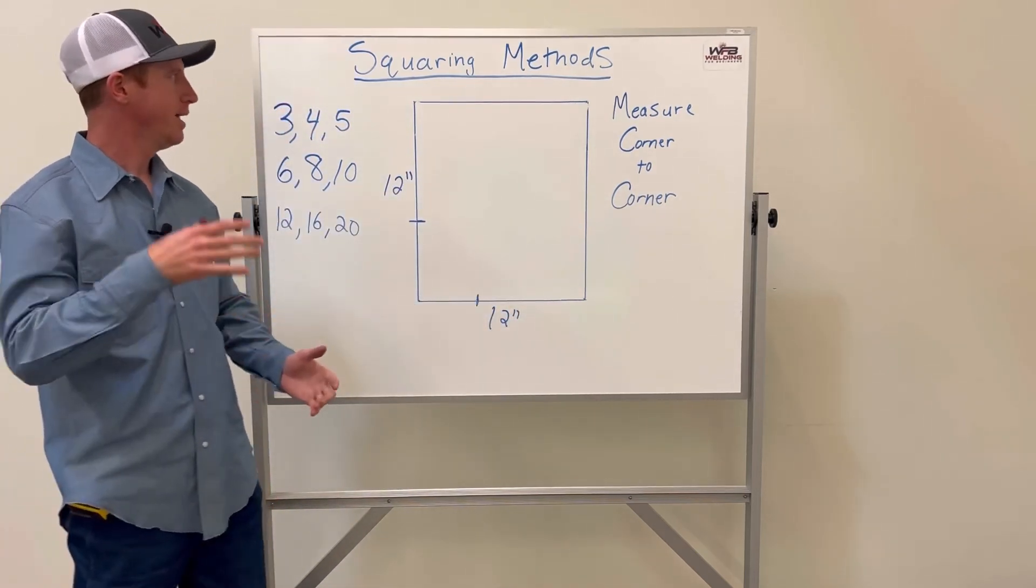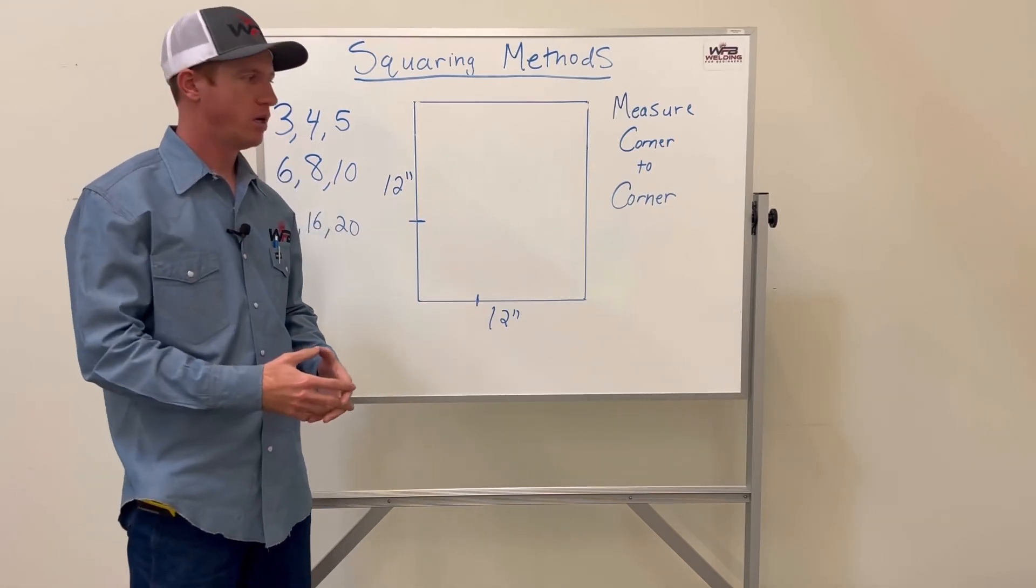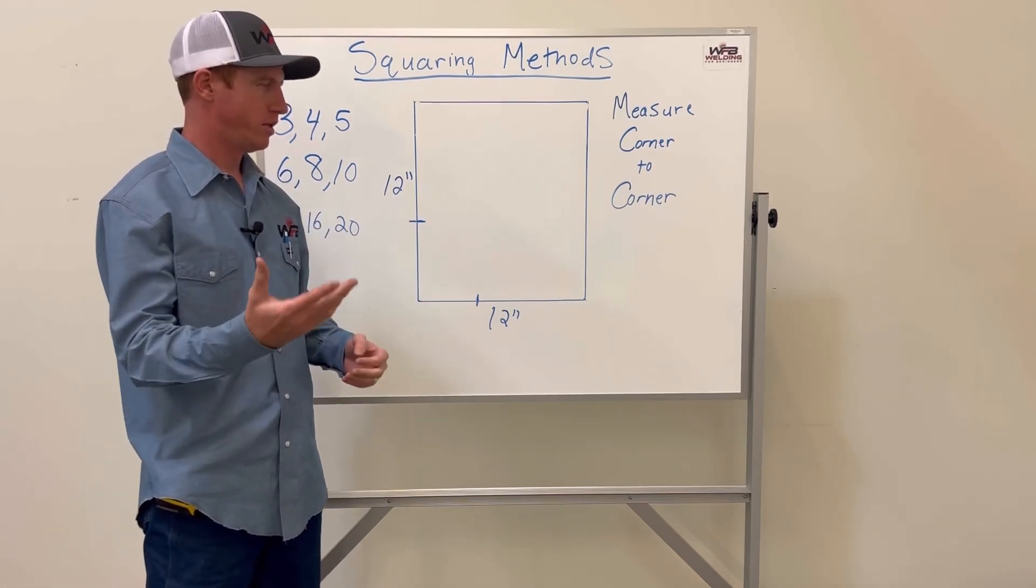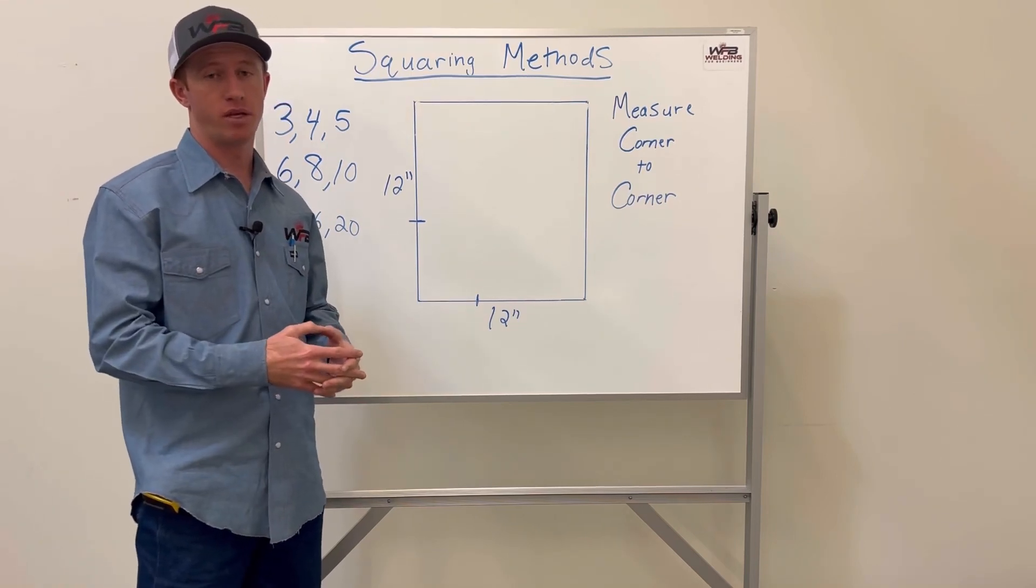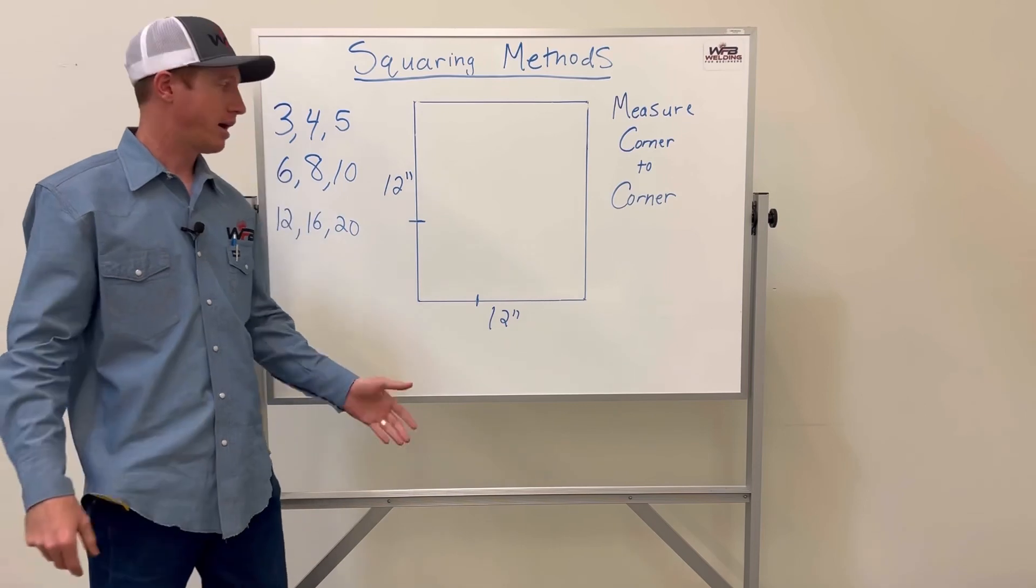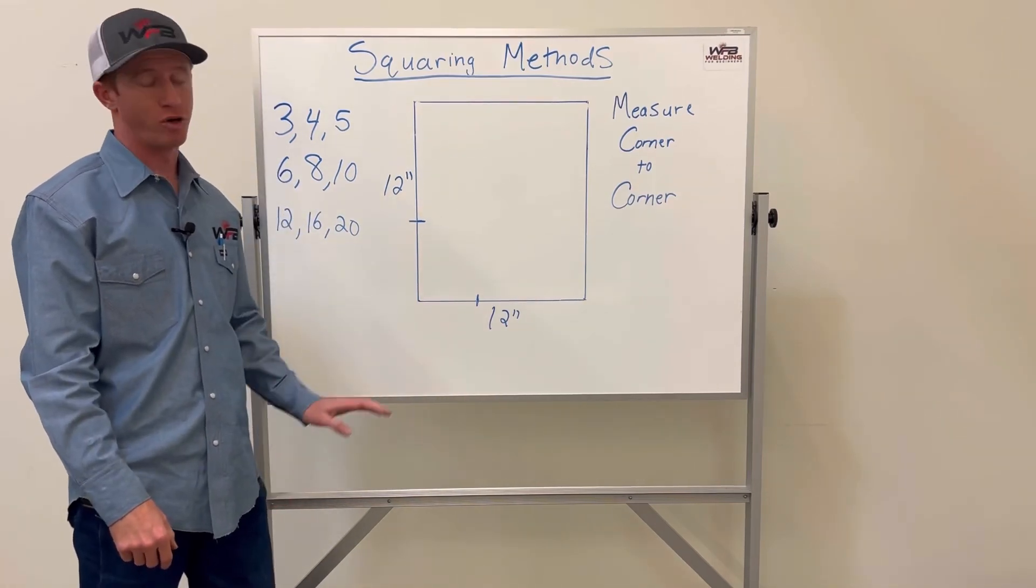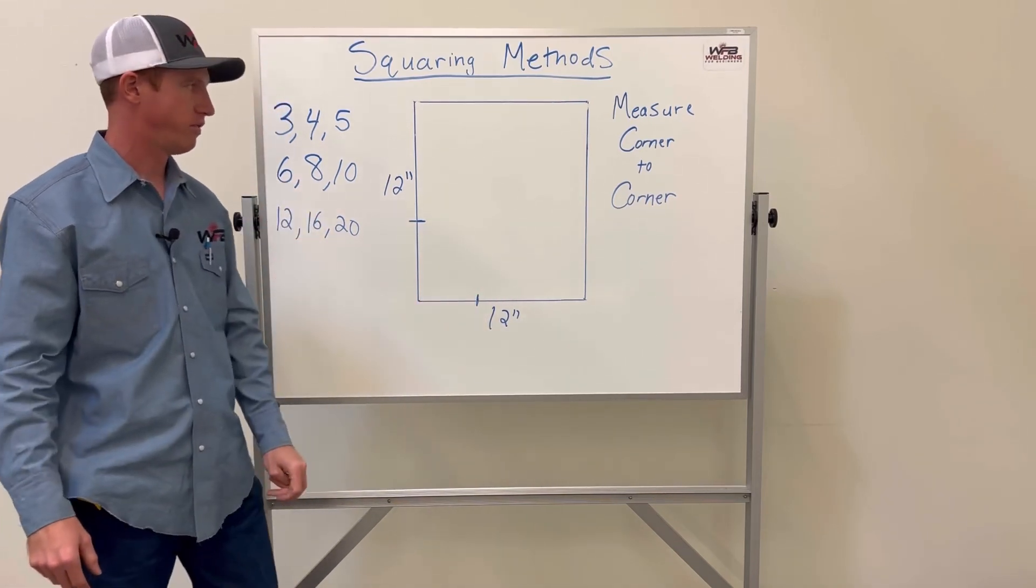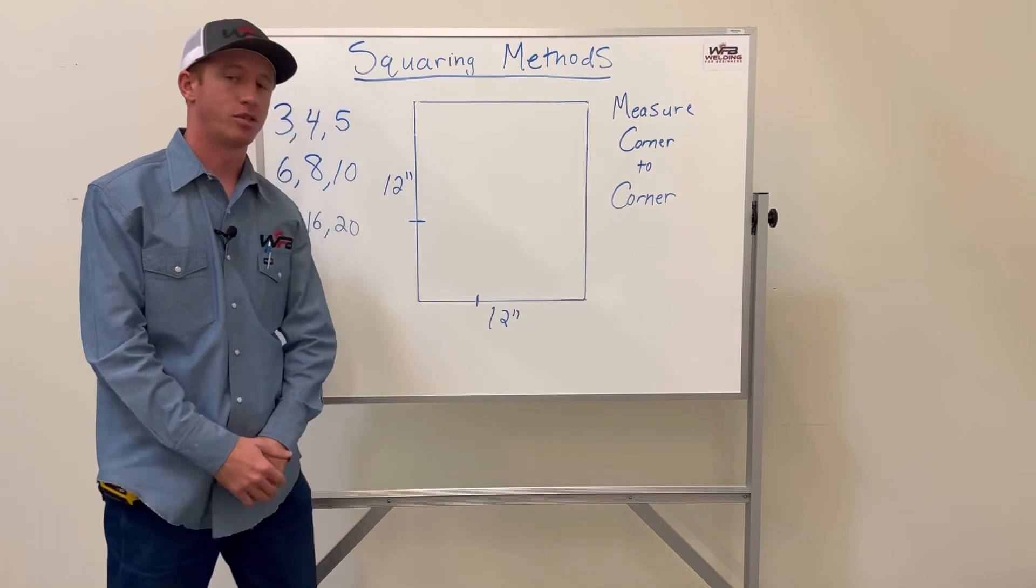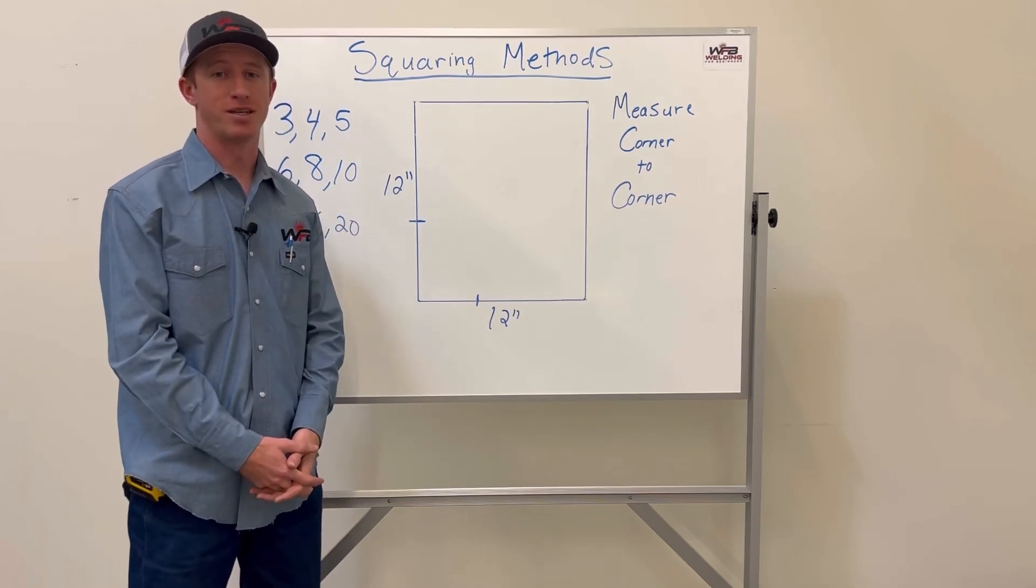Those are a few squaring methods that I use. They're very popular. There is another one, the Pythagorean theorem. I'm not much of a math guy, so these are the basic simple ones that I like to use. They work great—my structures always come out perfect when I do the 3-4-5 as well as measuring corner to corner. Use those if you ever need to square something.